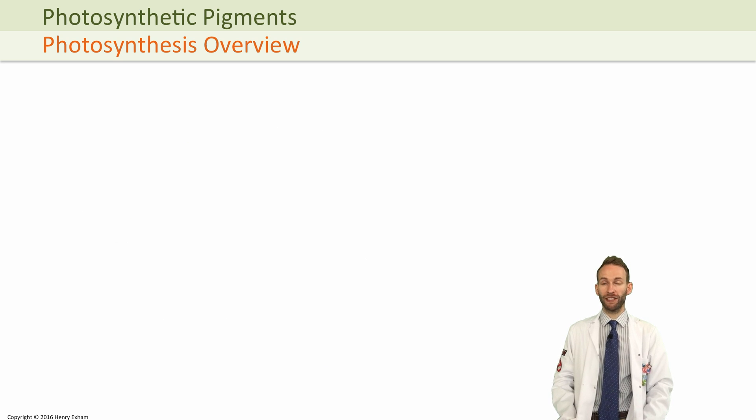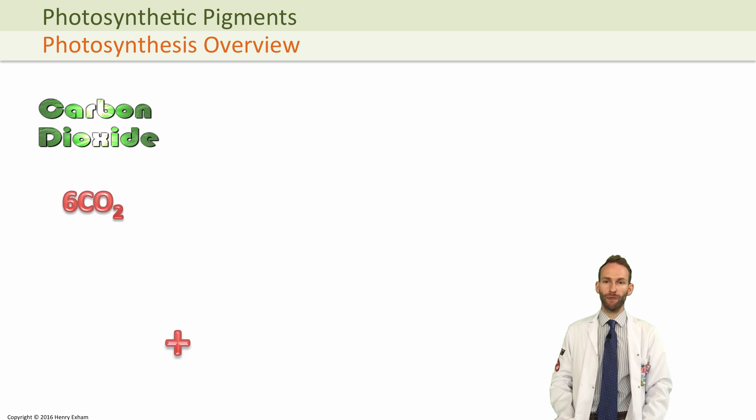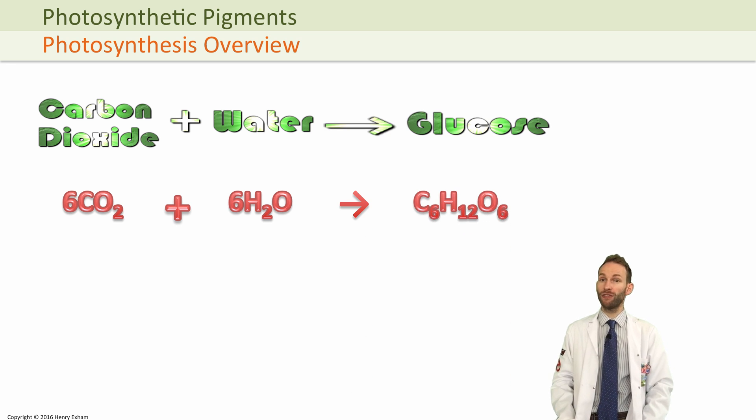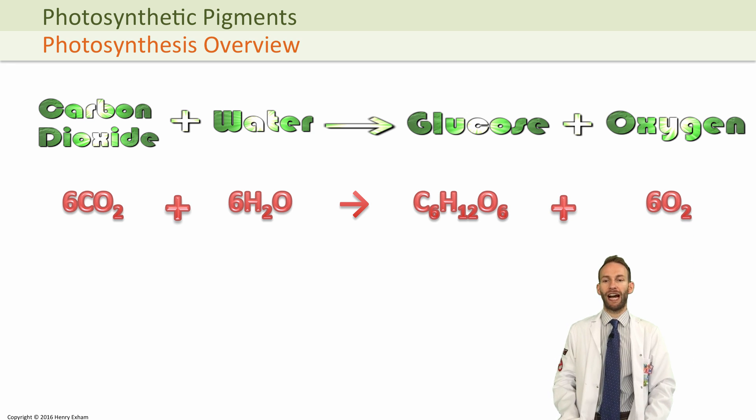Now what you should know about photosynthesis so far is that you take carbon dioxide and you take water, two particularly abundant molecules that you can find quite readily in the atmosphere, and actually combine those using chlorophyll and the energy to make glucose and oxygen.